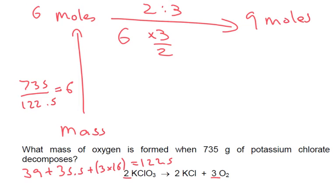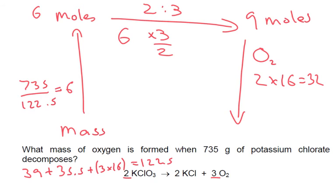Then going back down, we want to know what the mass of oxygen is. Again oxygen O₂, so 2 times 16 is 32. So our final answer is 9 times by 32, which gives us 288 grams.